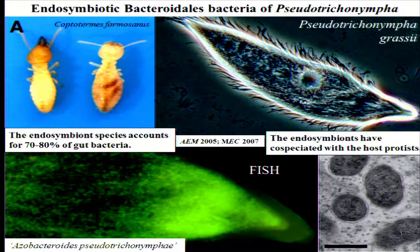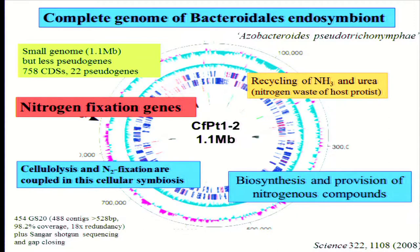The endosymbiont and protists are co-speciated. We successfully constructed a complete genome, which is also very small at 1.1 megabases. We found various biosynthetic genes for amino acids and cofactors in this genome. In addition, we found a complete set of nitrogen fixation genes and genes for recycling of ammonia and urea.